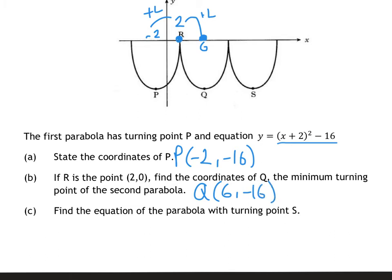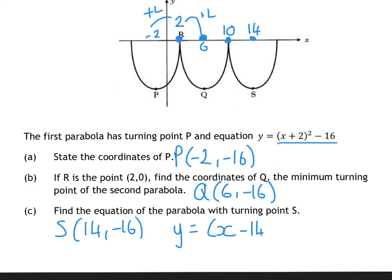It then says find the equation of the parabola with turning point S. Using this same stepping-out method: from 2, plus 4 gives 6, plus 4 gives 10, plus 4 gives 14. So S is along 14, down 16. When I put that into the equation, I've got y equals — positive 14 goes in as negative 14, and then it's down 16. So there's your equation for S. It's all using stepping out or knowing that these are symmetrical shapes.